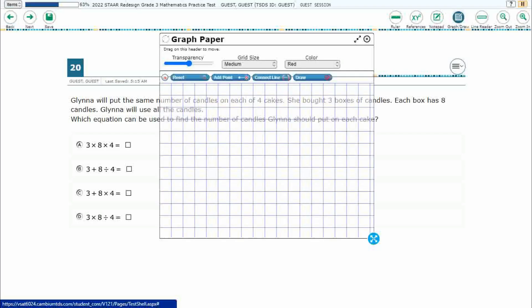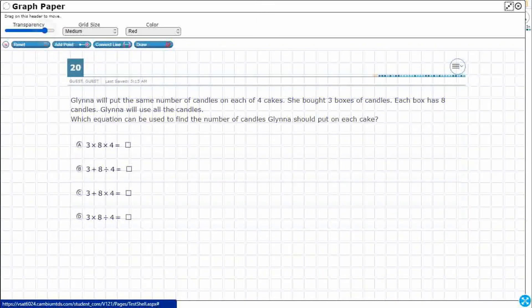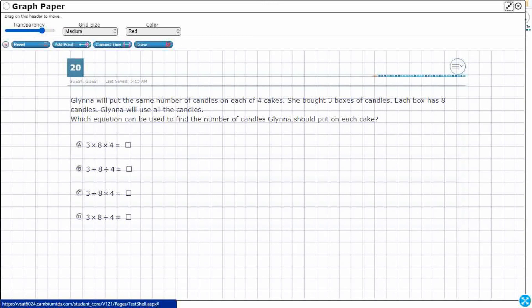Let's get our graph paper working here so we can make sense of this. I'm going to use that graph feature, expand it so I can use a much bigger workspace, and make it a little bit more transparent. Let's increase it so I can see the problem better behind it. I'll use this draw feature to start with.